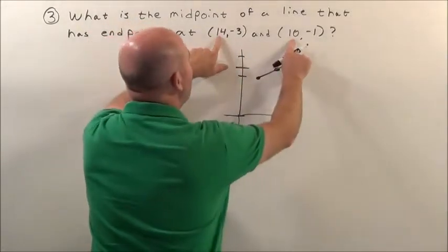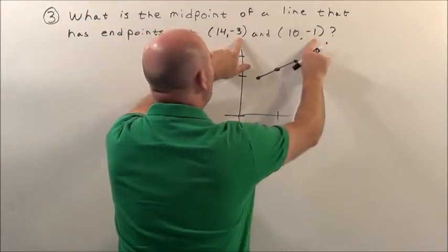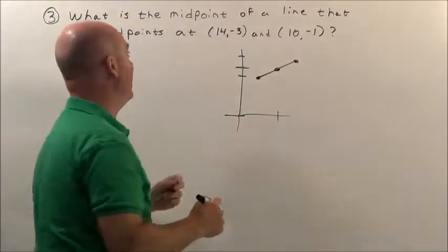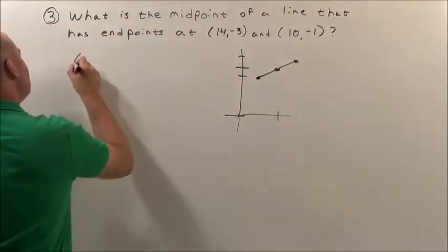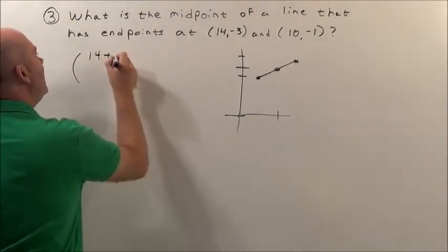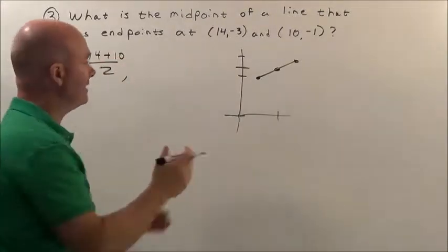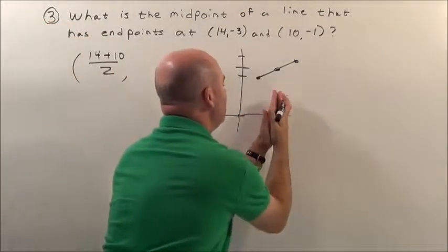To get the middle of the x's, we're going to add them together and divide by two. And to get the middle of the y's, we're going to add them together and divide by two. So basically, our midpoint will be add our x values together and divide by two. That'll tell us the middle of our x's. That'll tell us where these points meet in the middle.